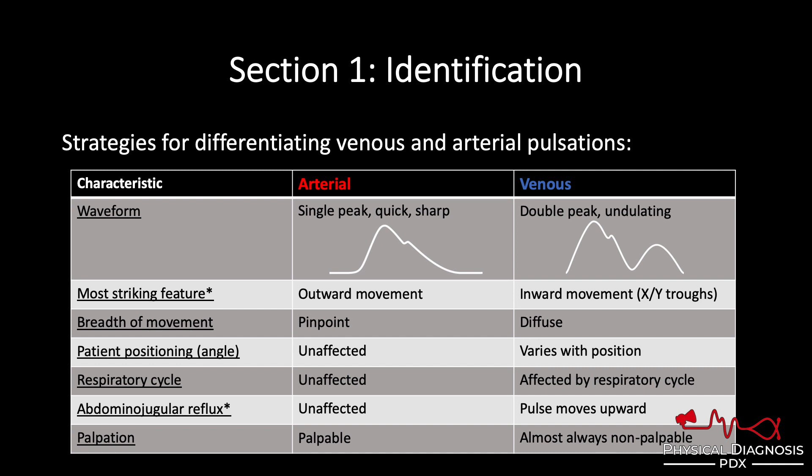The most striking feature of the arterial pulse is the outward movement. Obviously what goes out must come back in, but it does so subtly and gradually — it's hardly noticeable. It's a very passive retraction back to baseline. It's the outward movement that's active, and it's the outward movement that will catch your eye and that you will notice.